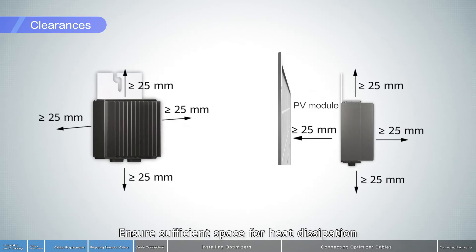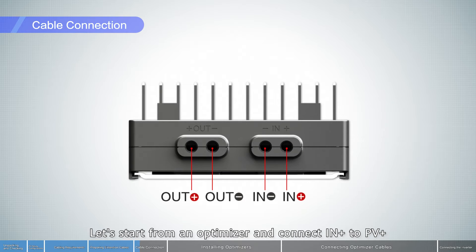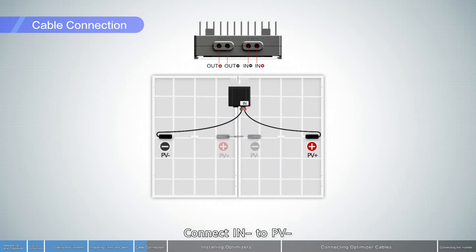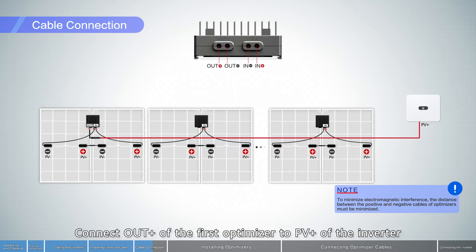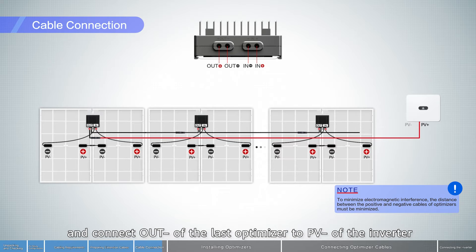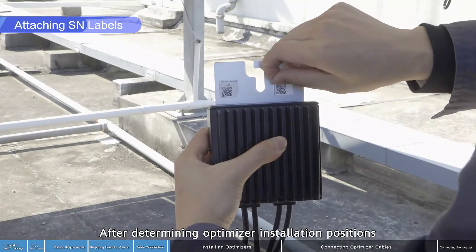Ensure sufficient space for heat dissipation. Starting from an optimizer, connect N positive to PV positive, and connect N negative to PV negative. Connect out positive of the first optimizer to PV positive of the inverter using the extension cable. Connect out negative to out positive between each pair of adjacent optimizers, and connect out negative of the last optimizer to PV negative of the inverter.